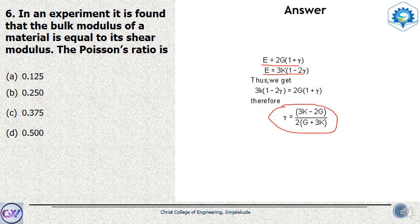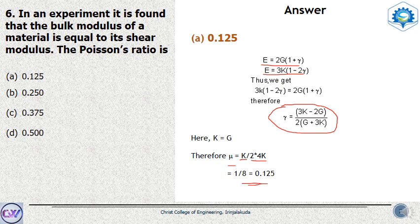In our question, K = G. Substituting: μ = (3K − 2K) / (2 × (K + 3K)) = K / (2 × 4K) = K / 8K = 1/8 = 0.125. K and K cancel out, so the value of Poisson's ratio is 1/8, which equals 0.125 — that is option A.